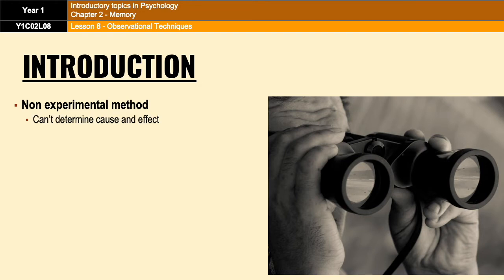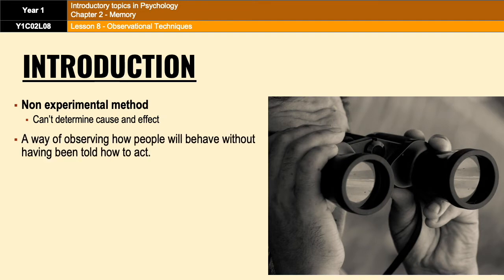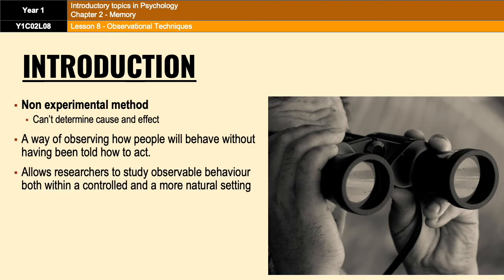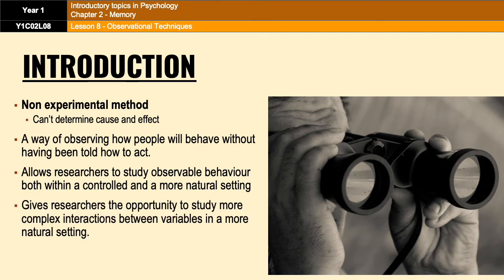Observations are called non-experimental because they don't allow us to determine cause and effect. However, observations are a very nice way of seeing what people do without actually having to ask them. They also allow researchers to study observable behavior within a natural or controlled setting, and to study more complex interactions between variables in a very natural way. As a side note, observations are very often used within an experiment as a way to assess a dependent variable.